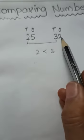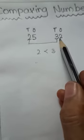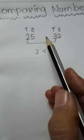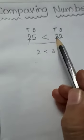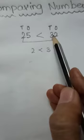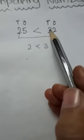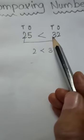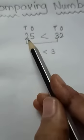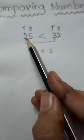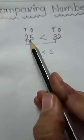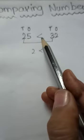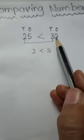Now, this 32 is the bigger number. Why? Because in the 10's place, we have the bigger number. So 32 is greater than 25, or 25 is less than 32.